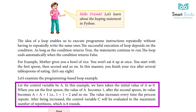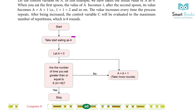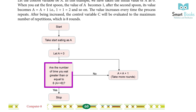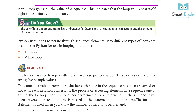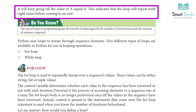The value increases every time the process repeats. After being increased, the control variable will be evaluated against the maximum number of repetitions, which is 8. Start — take 'a = 0'. Is the number of times you have eaten less than or equal to 8? No — then a = a + 1, take more rounds. Yes — Stop. It will keep going until the value of 'a' equals 8, meaning the loop repeats itself 8 times before ending.